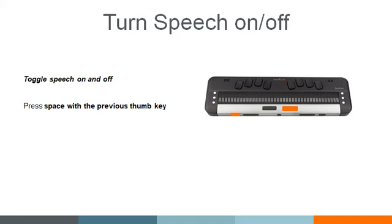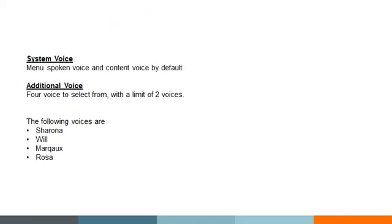We've gone through the speech settings menu — hopefully you've watched that video — and also gone through what the speak word under cursor setting is. Here I want to talk about content voice, and there are two kinds of voices. You have a system voice, which is the menus and what voice is used when those things are spoken. And you can also add an additional voice to your unit.